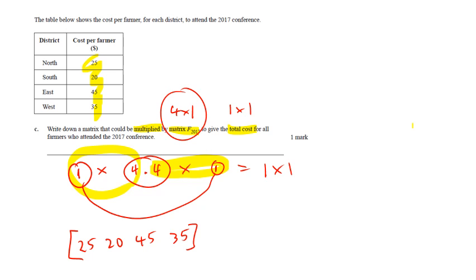Right, and so later on you can multiply it by the F2017 and it'll give you a one by one answer. They don't actually ask you to do it yet.